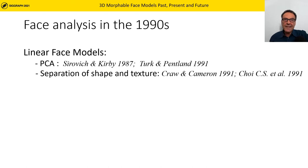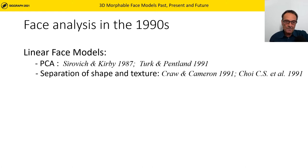At the same time, Craw and Cameron argued that the variability of human face shape should be modeled separately from the texture. Also in 1991, Choi et al. proposed that 3D models, as they are used in computer graphics, should be used for representing face shape.